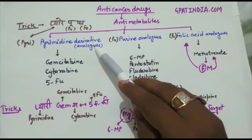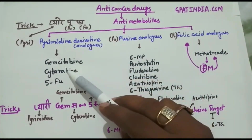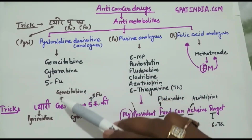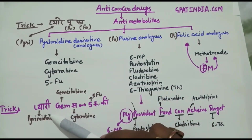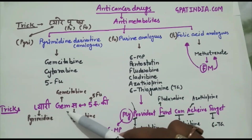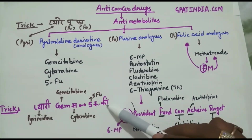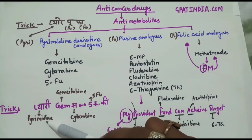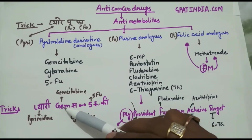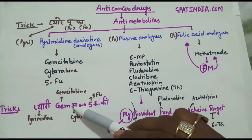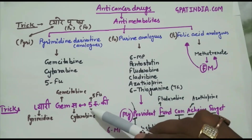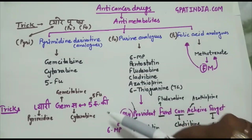In pyrimidine analogs we have three drugs: gemcitabine, cytarabine, and 5-fluorouracil. We can remember them with a short trick: 'pyrimidine 5'. So 'gem' is equal to gemcitabine, and '5' is equal to 5-fluorouracil.